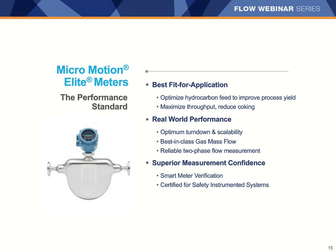Micromotion meters offer superior performance under real-world conditions. The Elite flow meters provide the best measurement for the hydrocarbon feed to help optimize the ratio and improve the conversion while reducing coking. They offer up to a quarter percent mass flow accuracy for gas, which is unmatched, and that accuracy applies over a really wide range of flows. Micromotion also offers advanced diagnostics that can give you more confidence that your meter is working correctly without interrupting the process. For safety instrumented systems, Micromotion offers both certified and proven in-use devices good for up to SIL 3 applications.